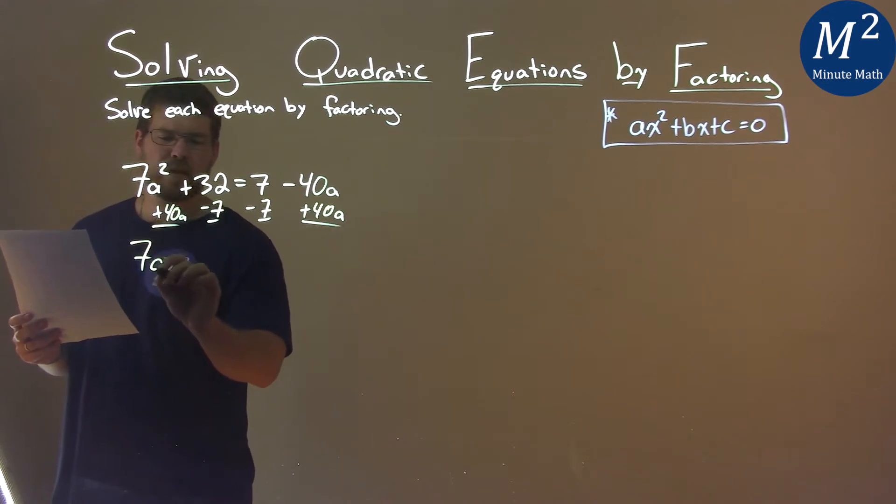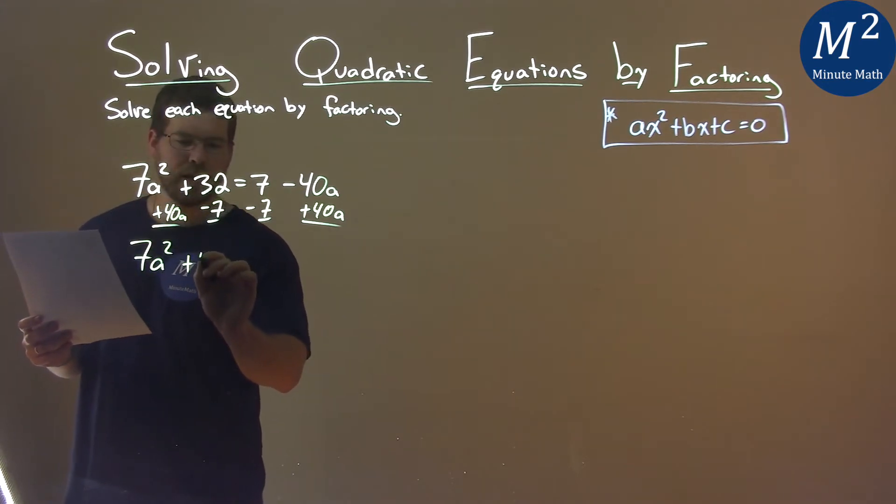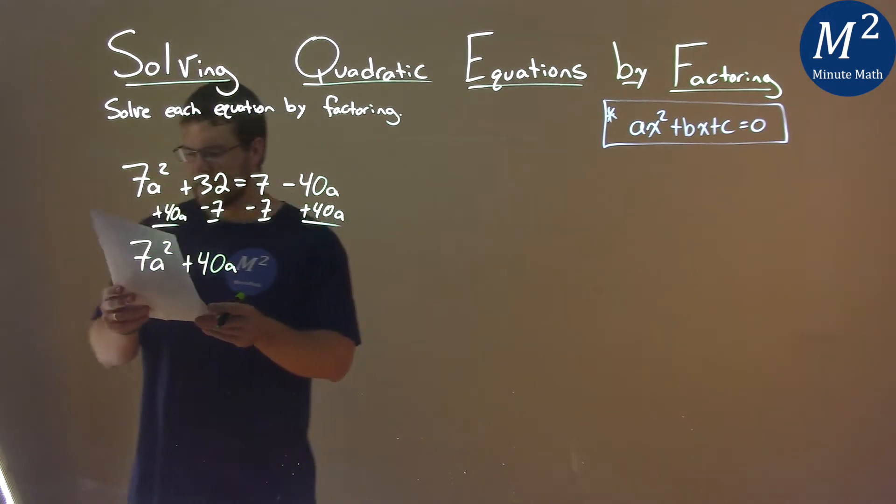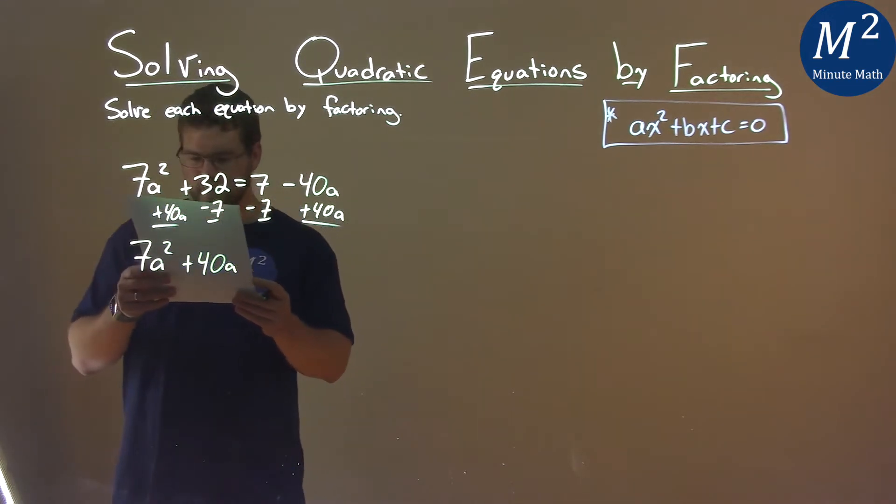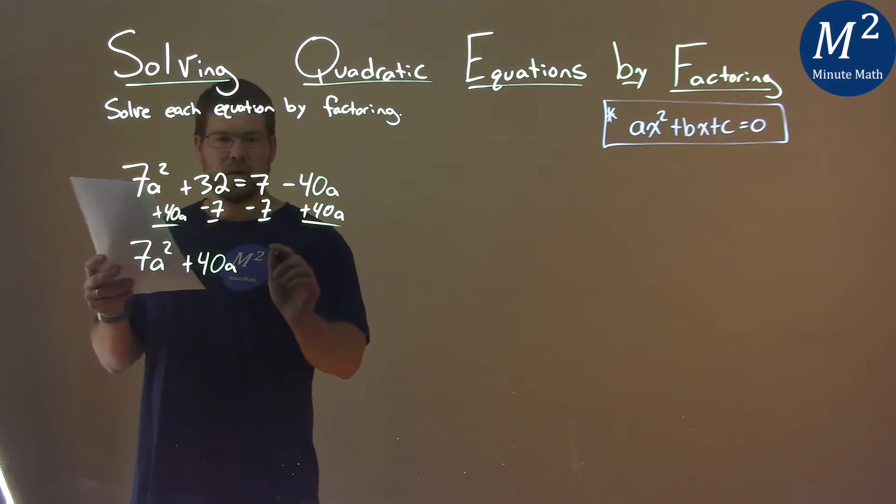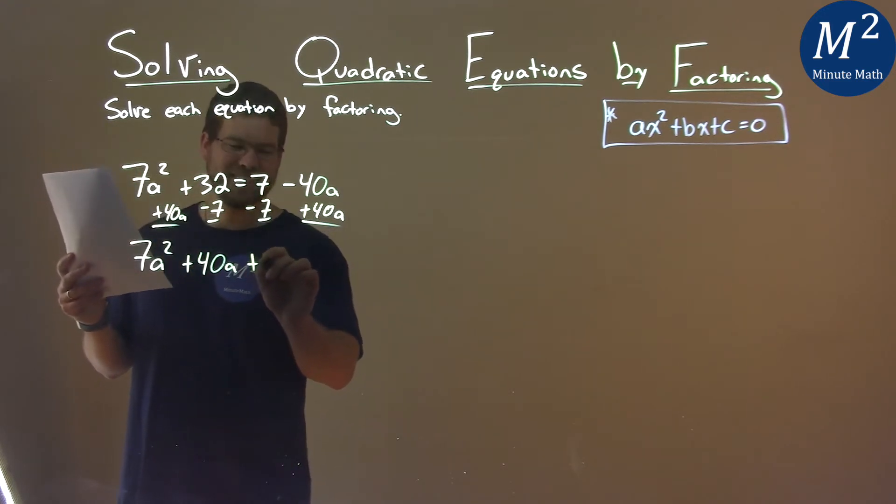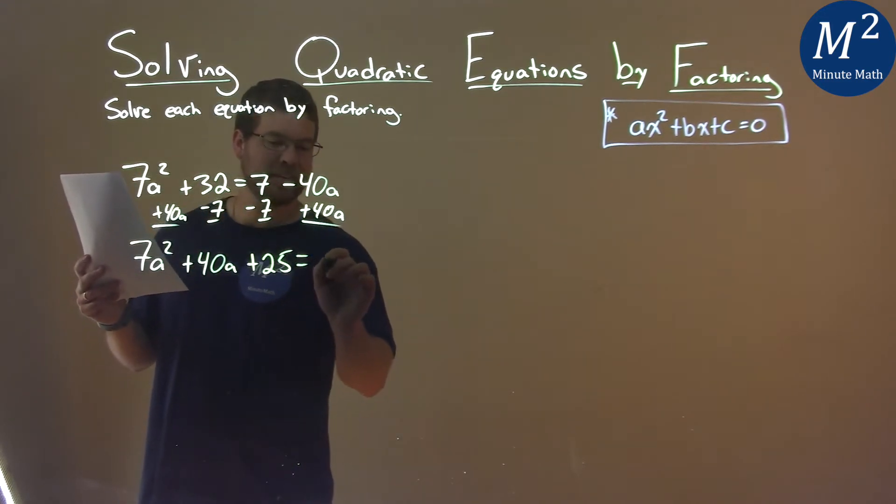Nothing pairs up with 7a squared, then the 40a comes down, and then 32 minus 7 is 25. Got lost in my notes there. Equals 0.